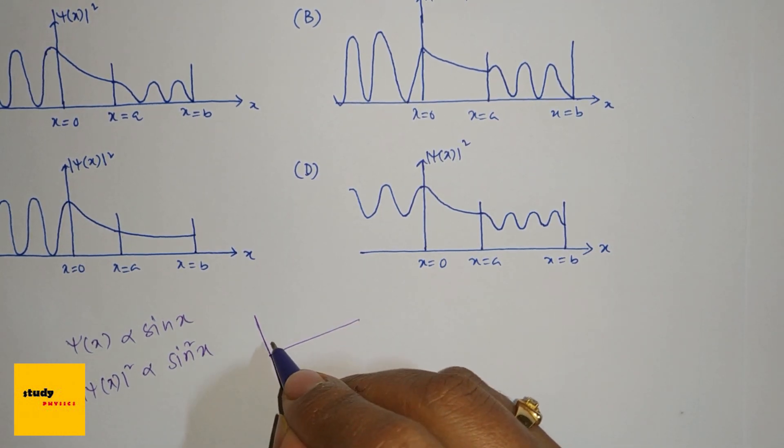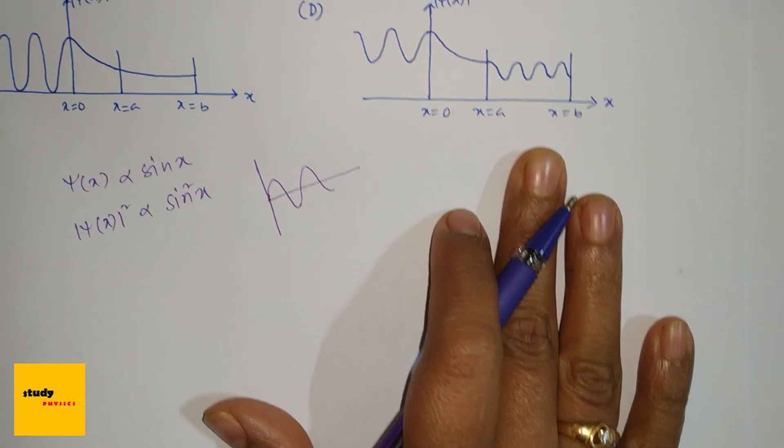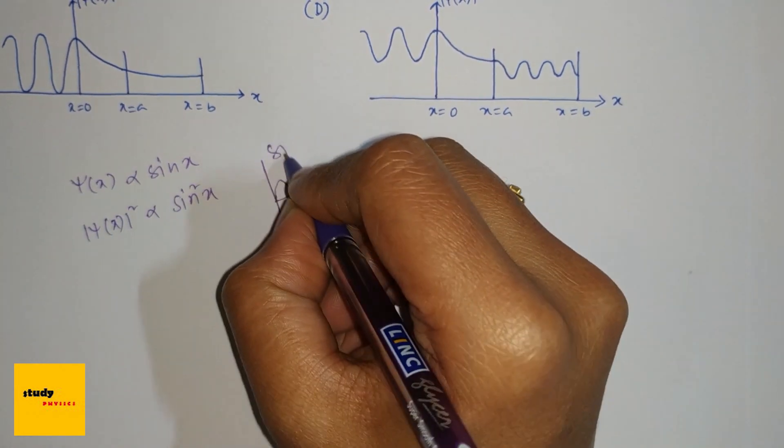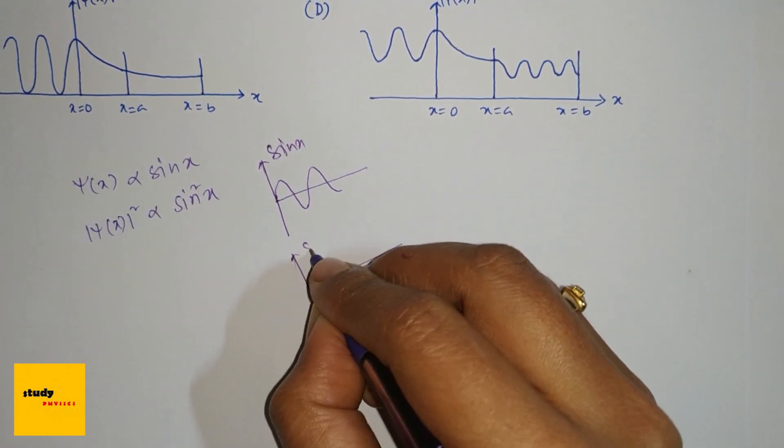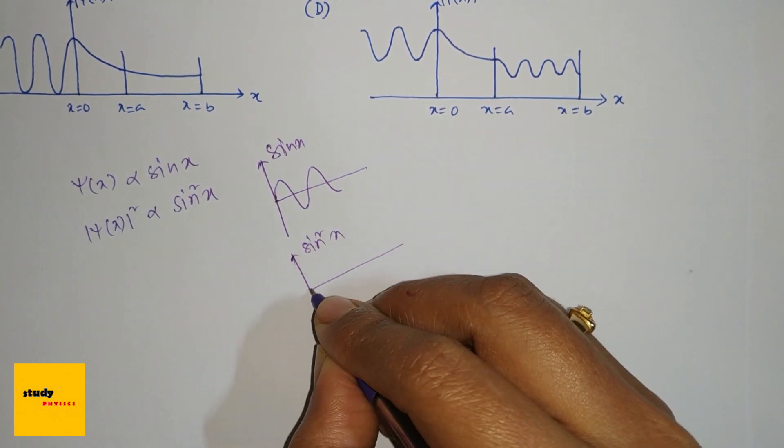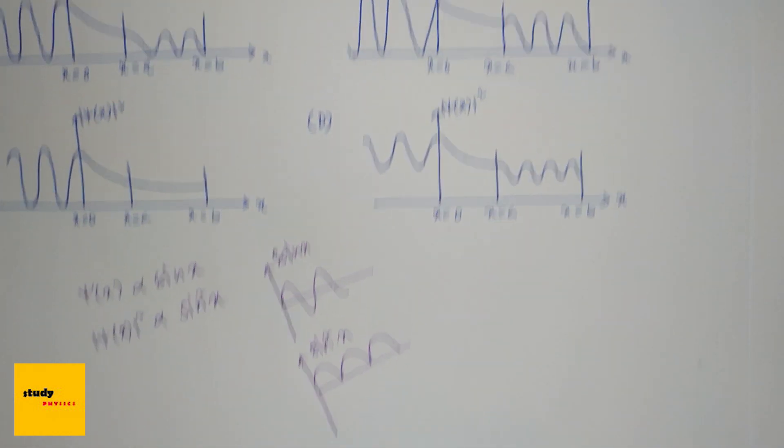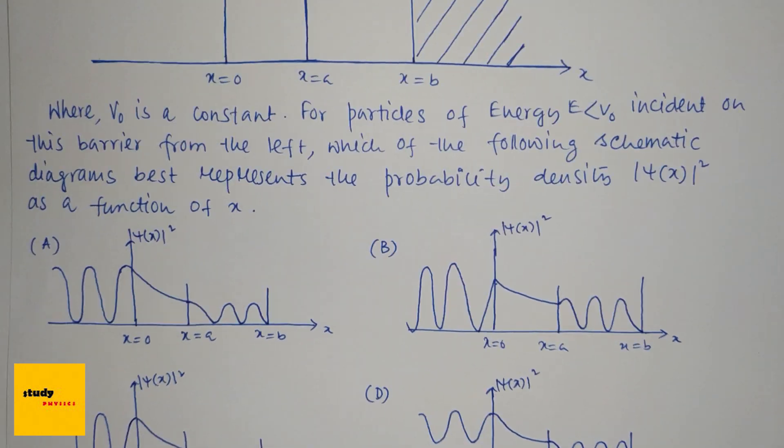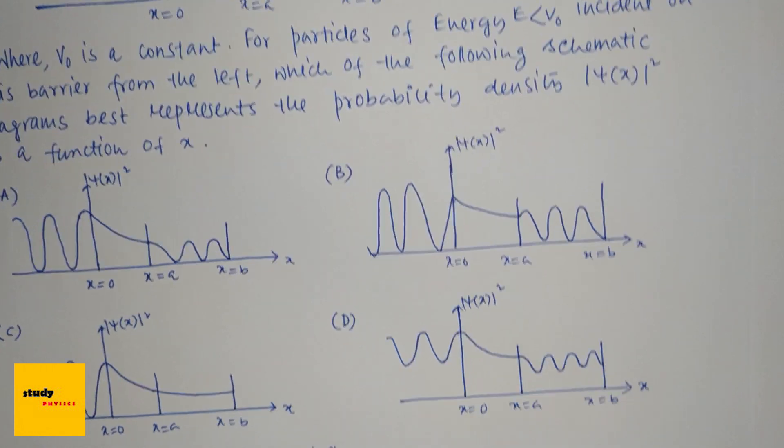like this, and this is sin(x), and sin²(x) is like this. So first of all, you can see from the graphs that every graph has the same curve like sin².